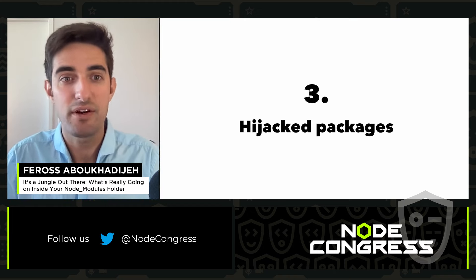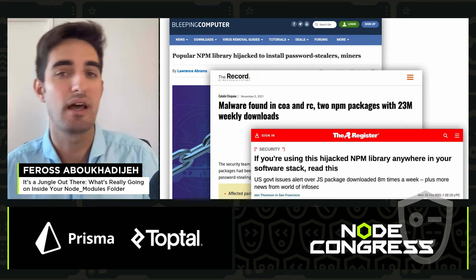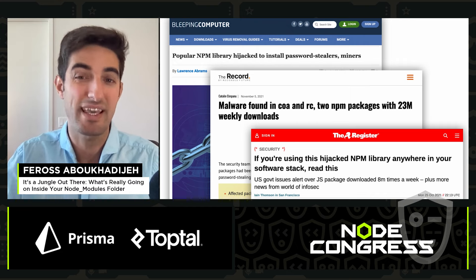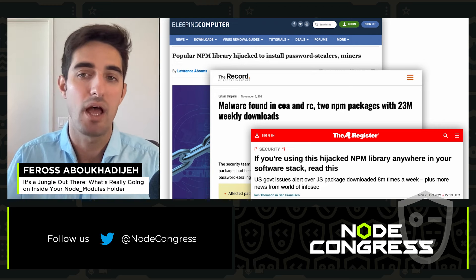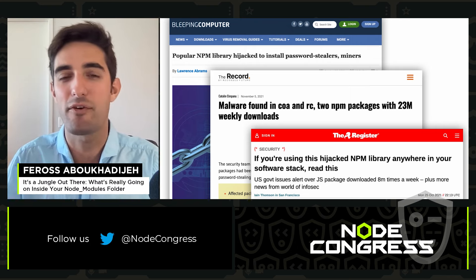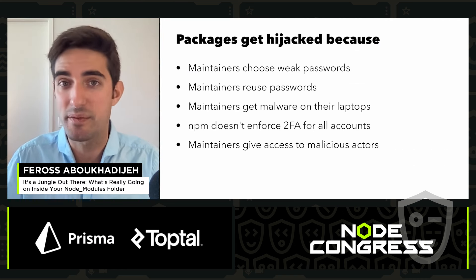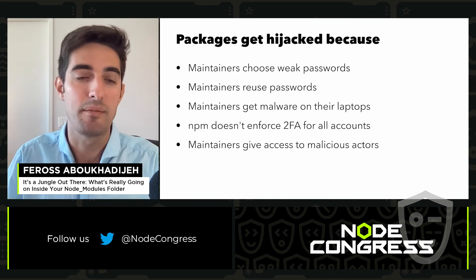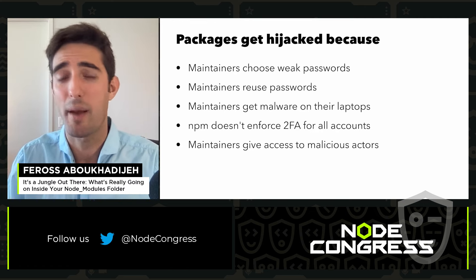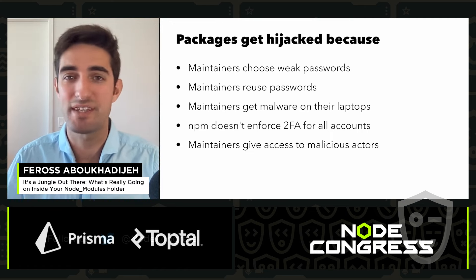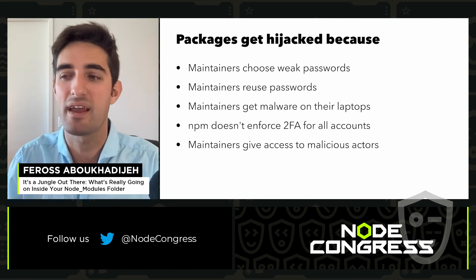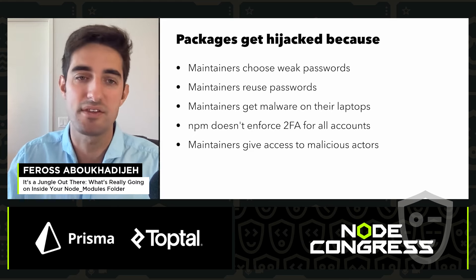The third vector is hijacked packages — criminals finding ways to infiltrate communities and infect popular packages. Once they get control and can publish to a package, they'll steal credentials, install backdoors, or abuse compute resources for cryptocurrency mining. This happens because maintainers choose weak passwords, reuse passwords, or get malware on their laptops. It's not helped by the fact that NPM doesn't enforce two-factor authentication for all accounts, although they are starting to enforce this for the most popular accounts. Sometimes maintainers simply get tricked into giving access to a malicious actor, partly because maintainers are overworked and it's hard to say no to help.